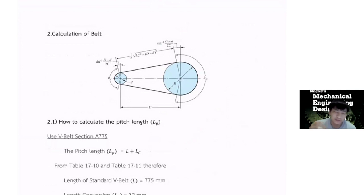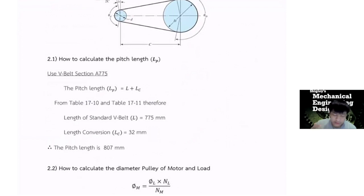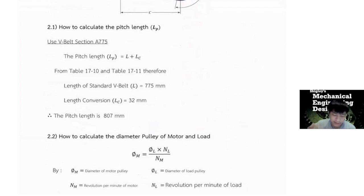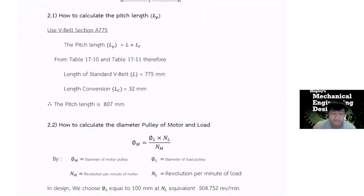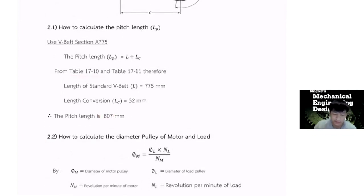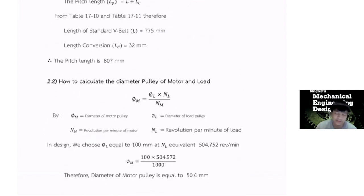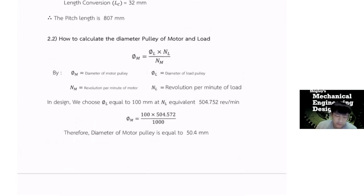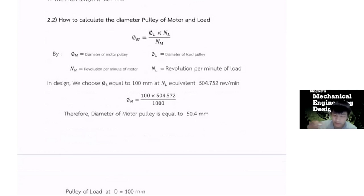I show you how to calculate of belt, calculation of belt. First, we use the V-belt section A775. And we can find the length, the width length of belt is the 807 millimeter by the table below the appendix. Before we calculate the center to center, we choose the diameter of the motor pulley and the diameter of the load pulley by this convention, by this equation.